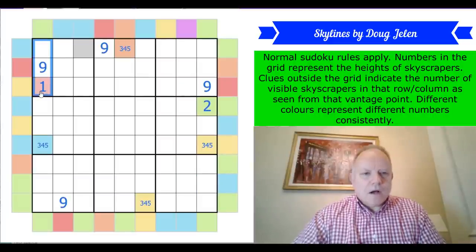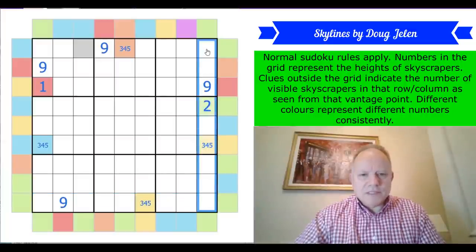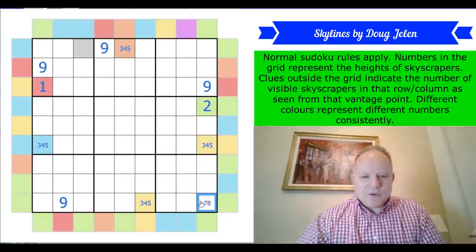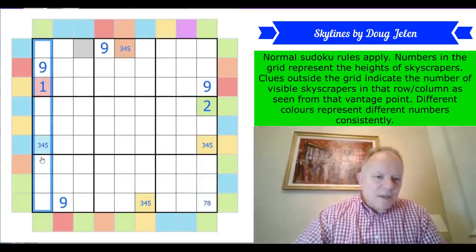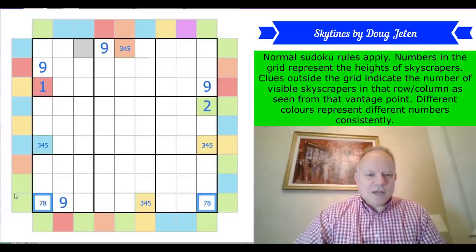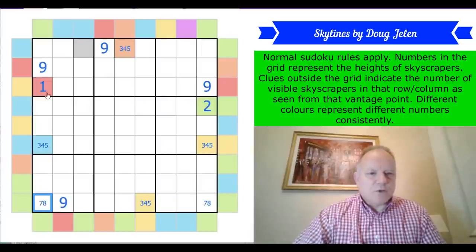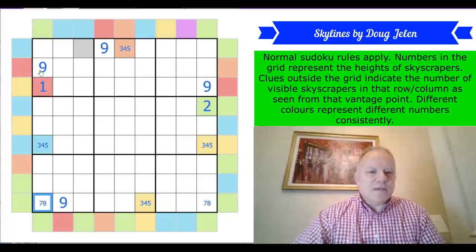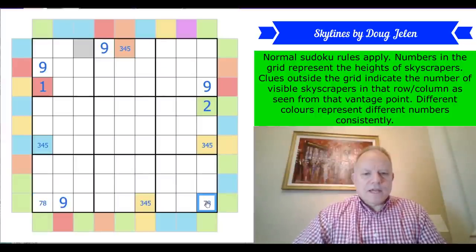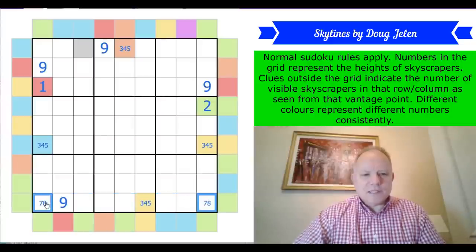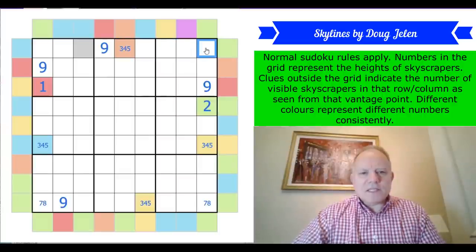Green is two here as well, and also two from the right side of the bottom row and from the bottom of the right-hand column. Orange, blue, and yellow are some mix of three, four, and five. Now this cell has to be seven or eight - the skyscraper will be seen by the clue but then nothing else will be seen, so everything else must be smaller. The only number bigger than the rest in that position must sit there.